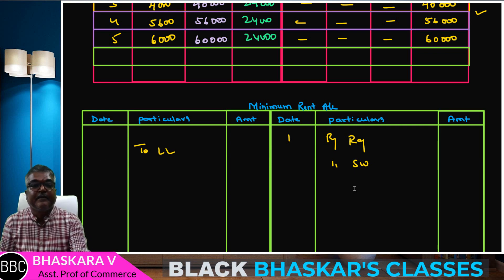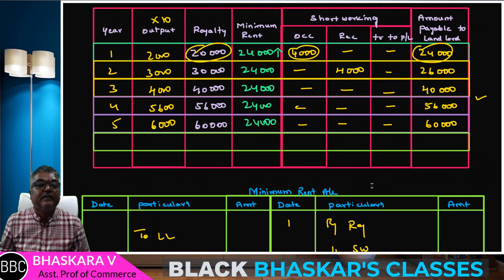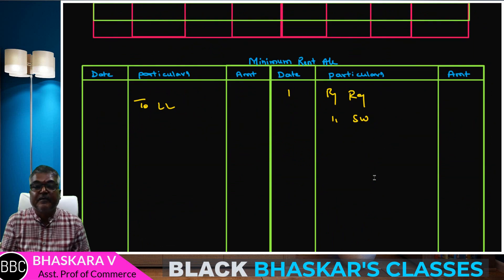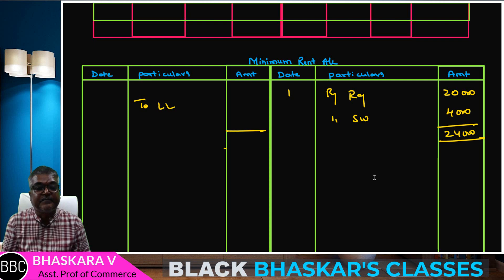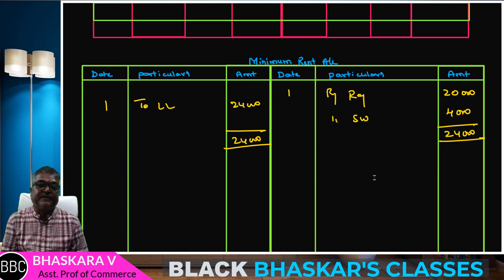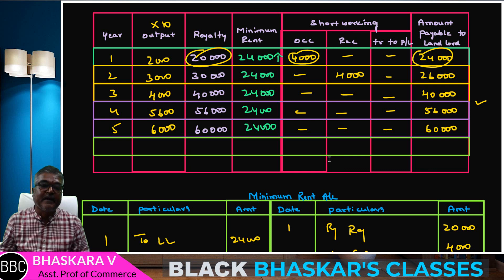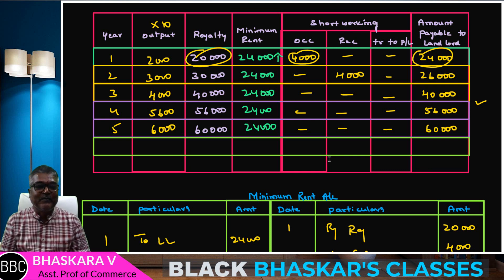If royalty is 24, short working is 4 — sales 24,000 to landlord. That is the first year. It is the minimum rate account because it is the first year. Next: short working account is easy.